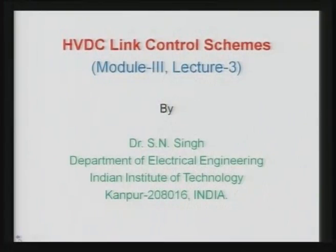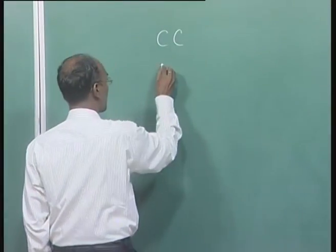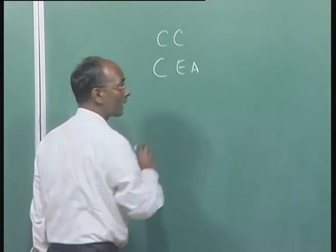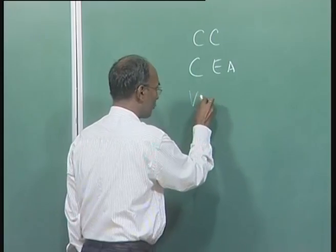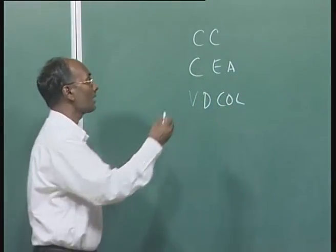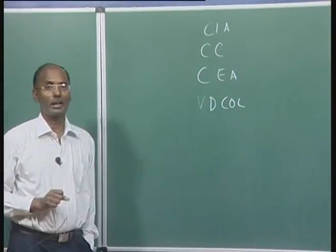Welcome to lecture number three. In this lecture, I will discuss the various control schemes nowadays used for HVDC control. In the last lecture, we saw that we have approximately three characteristics: one is CC (constant current), another is CEA control; if working as an inverter mode, we have VD control when voltage is very low, and also CIA, that is constant extinction angle control.